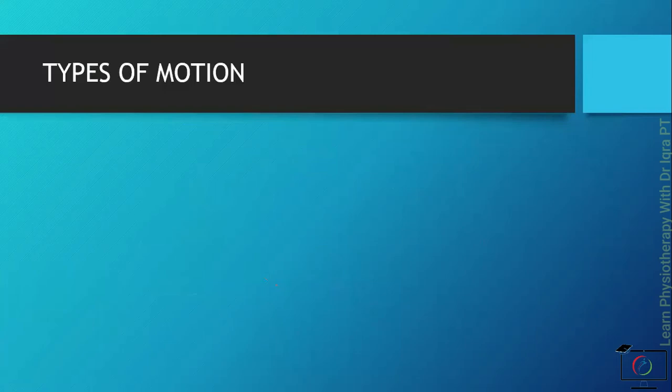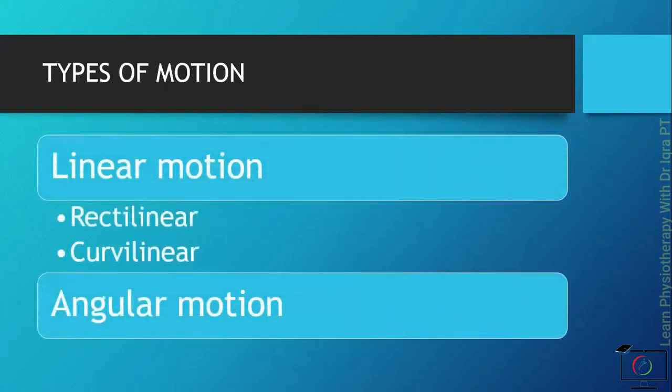The types of motion we will discuss are linear motion and angular motion. Linear motion, as the name indicates, is motion in a line, also known as translatory motion. It has two subtypes: rectilinear motion, which is movement in a straight line.